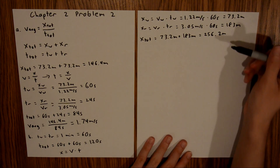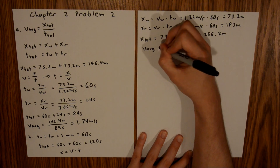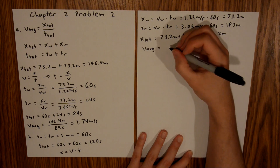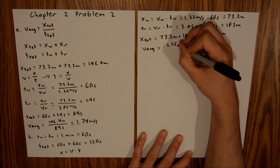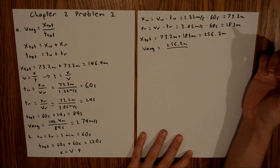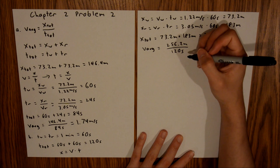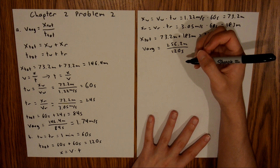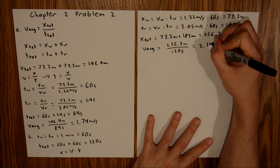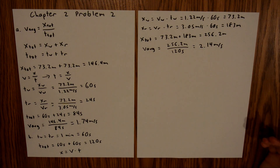Now that we have T-total and X-total, we can find our average velocity. V-average is equal to our X-total, which is 256.2 meters, divided by our T-total, which is equal to 120 seconds. And if you plug that into your calculator, you will find that the average velocity for Part B is equal to 2.14 meters per second. And so now that's it for Part B.